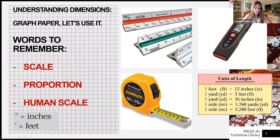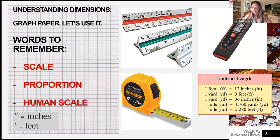This class was tailored for kids 14 and up, so let me clarify: this is the symbol for inches and this represents 15 feet. On the right-hand side, we have the units of length used in the United States. One foot equals 12 inches. One yard equals three feet, or 36 inches. One mile, abbreviated MI, is 1,760 yards, or 5,280 feet.